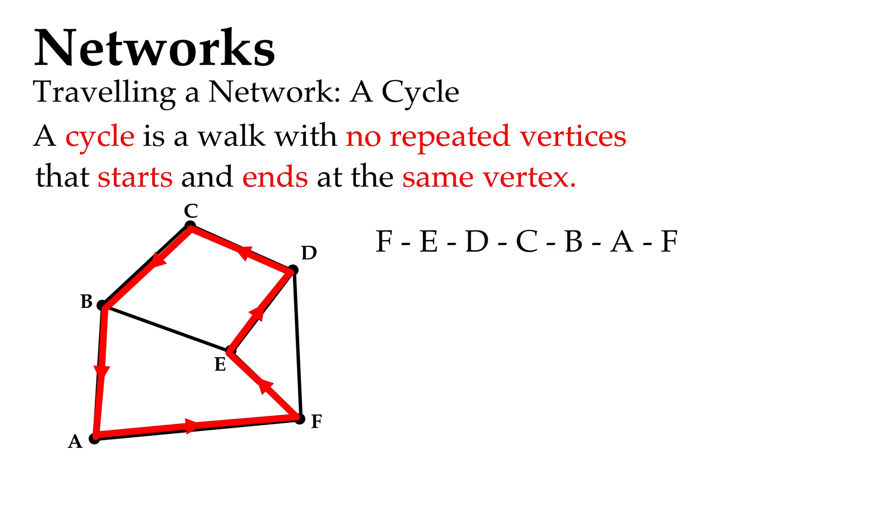So unlike our circuit, we can't repeat any vertices in this one. Now, just a side line here, a cycle is called a closed path, just technically, and it has no repeated edges.